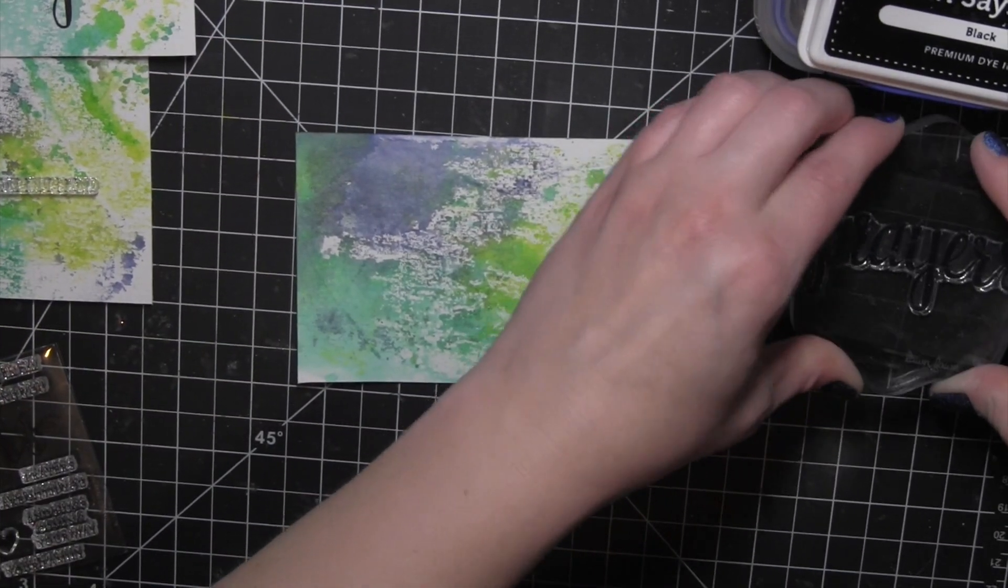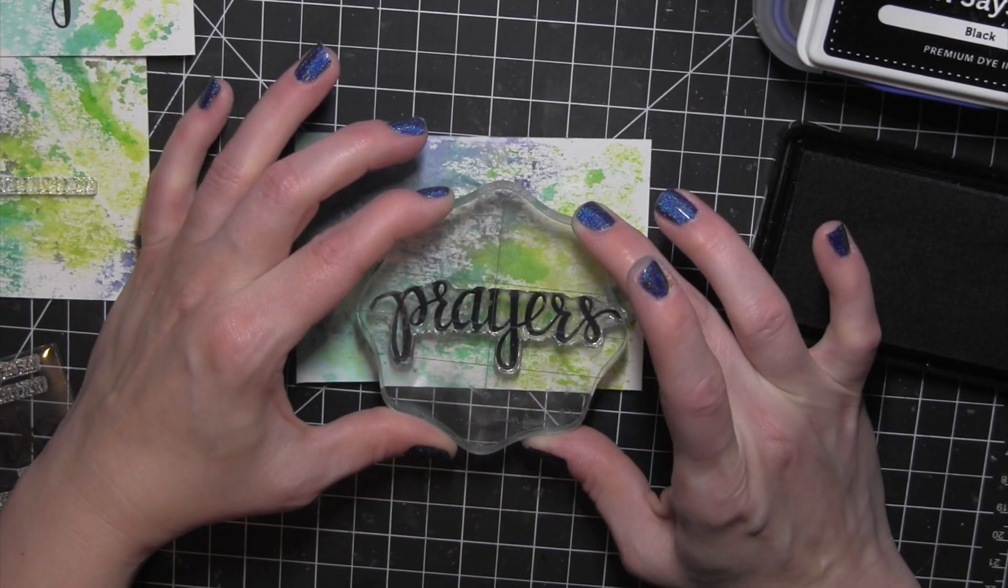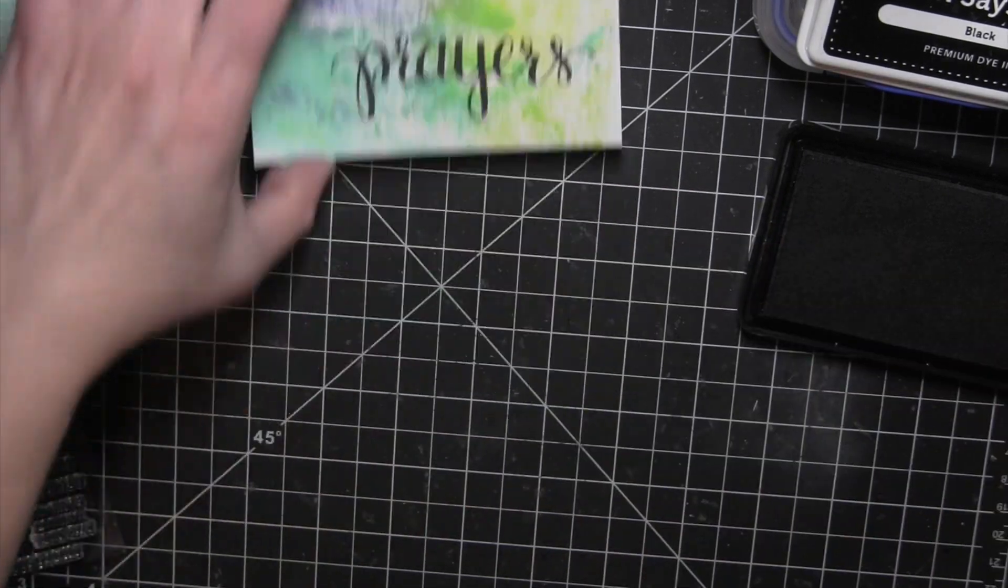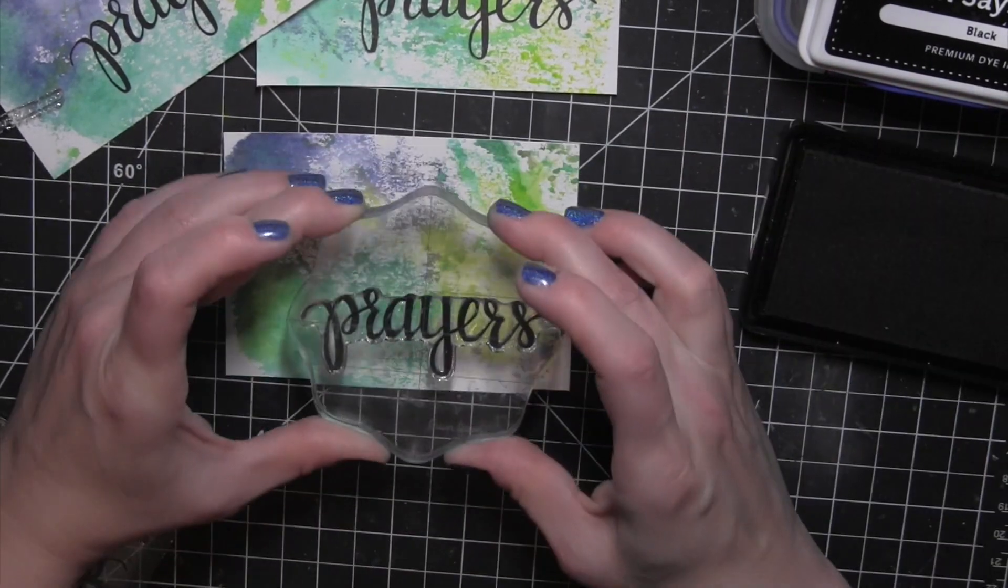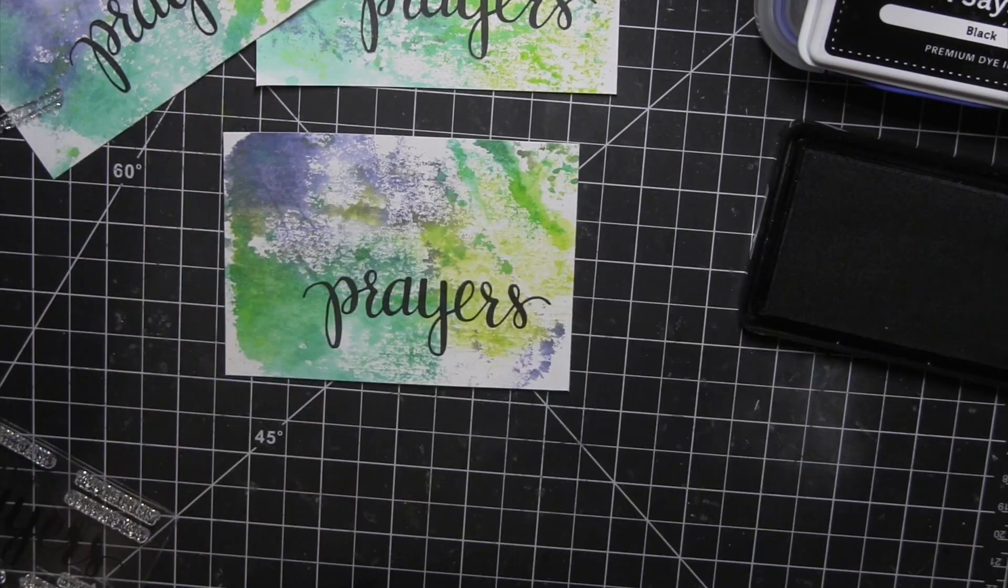I'm doing this kind of assembly line style. I did all my backgrounds. Now I'm going to stamp the word Prayers to each of these, big, bold and black there. Make sure it's nice and crisp and easy to read.